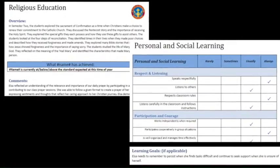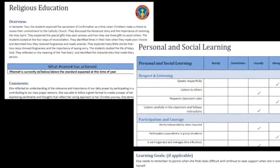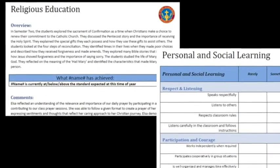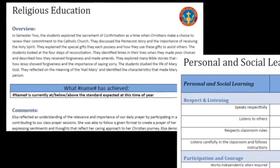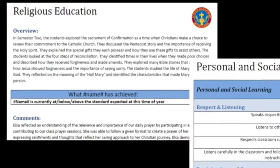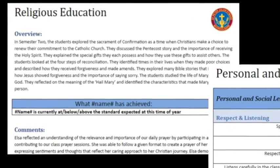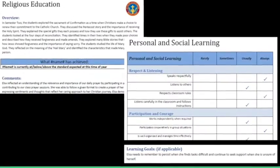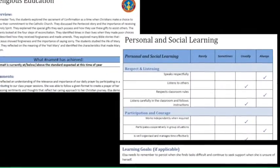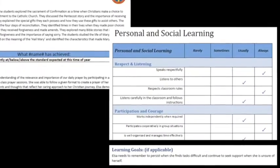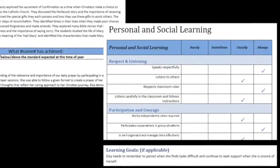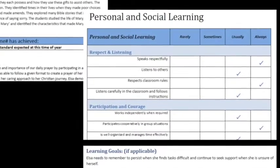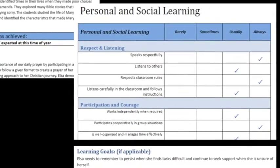Here's a snapshot of some of the pages. The first shows the religious education page — the overview, the drop-down box, and comments underneath. This is what our personal and social checklist looked like. We used our school agreements as the items in that checklist, and the headings on that page were: Rarely, Sometimes, Usually, Always.